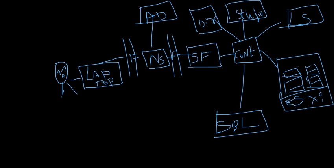Every Citrix infrastructure component would have redundancy. There is not just one NetScaler — you would have at least a couple of NetScalers in HA (high availability). If one NetScaler goes down for whatever reason, the other NetScaler takes over and handles the traffic. They are essentially a pair.